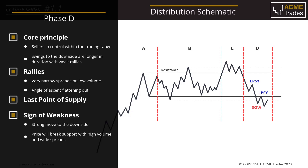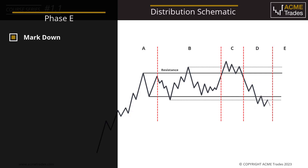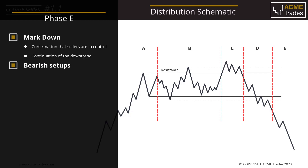Due to the nature of breaking support with high volume, the smart money may need to test this area for potential demand, as they do not want any buying friction before markdown commences. And lastly, Phase E within distribution is confirmation that sellers are indeed in control — continuation of the downtrend — and lower prices are achieved with little selling pressure. Phase E certainly favours downside continuation going forward into markdown, as it has higher odds of success.